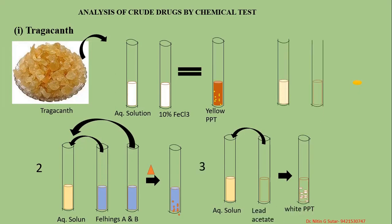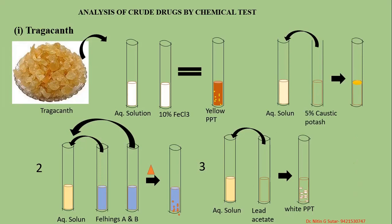The fourth test: take the aqueous solution of tragacanth and add 5% caustic potash. A canary yellow color is formed. You have to observe that the canary yellow color is formed on the upper side. That indicates that tragacanth is present.